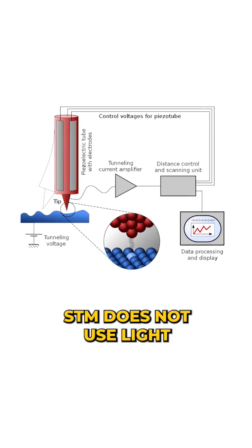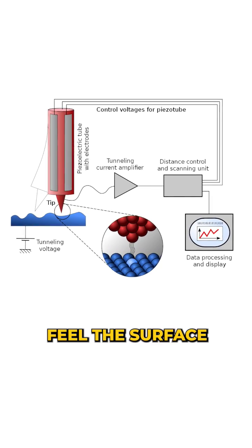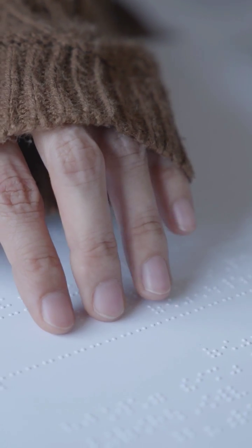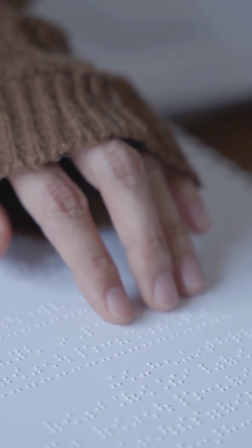You see, STM does not use light to see a surface. Instead, it tries to feel the surface. Imagine a person who cannot see trying to read braille by feeling the raised dots of its letters.